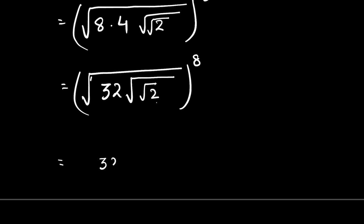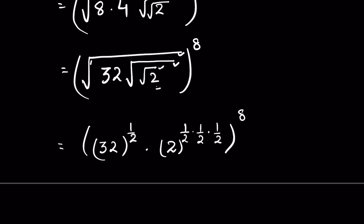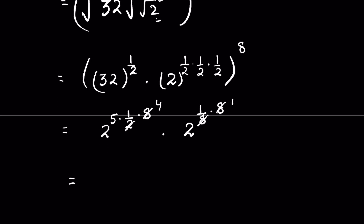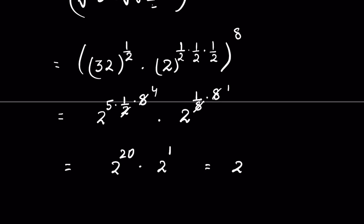Now 32 under square root means 32 raised to the power 1/2, and 2 is under square root — 1/2 times 1/2 times 1/2 times 1/2 — then whole raised to the power 8. This gives 2 raised to the power 2, whole raised to the power 8, times 2 raised to the power 1/8, times 8. Since 2 times 4 is 8 and 8 times 1 is 8, we get 2 raised to the power 20 times 2 raised to the power 1, which equals 2 raised to the power 21.